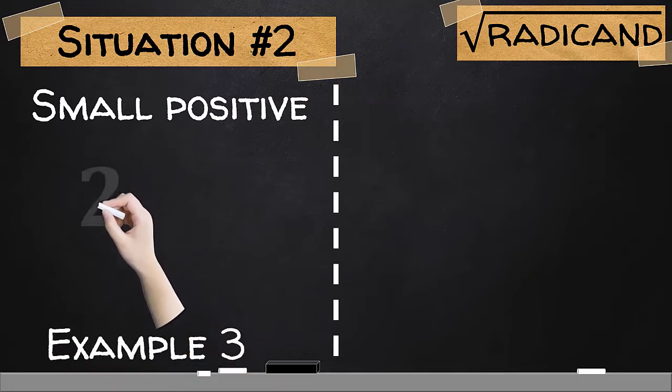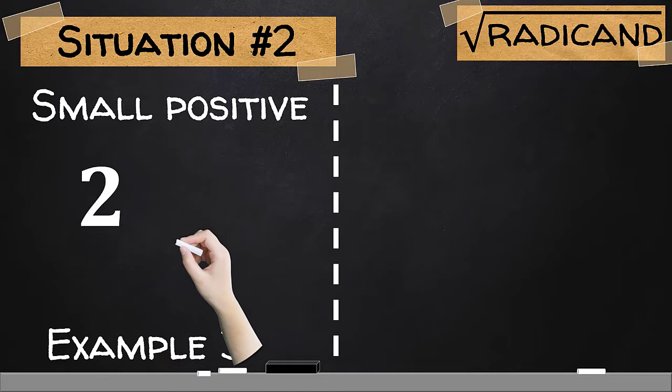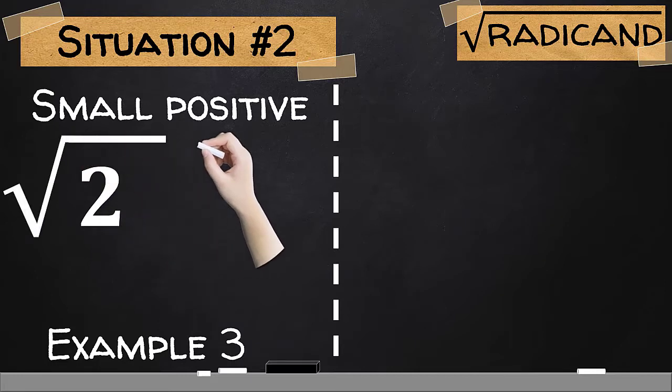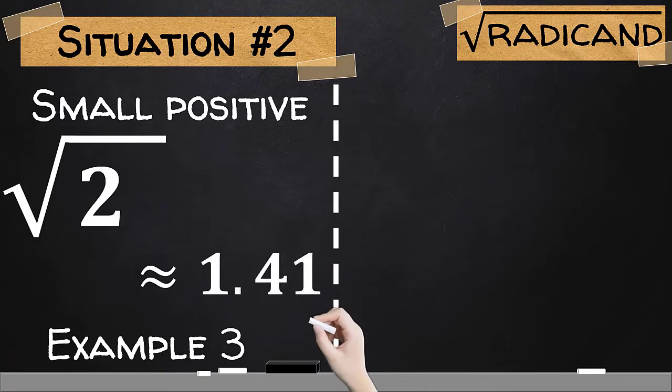What if the radicand is 2? To get the principal square root of this, again, we simply need to place the square root symbol. And since 2 doesn't have any factor which is a perfect square number, we could just simply stay as this is or approximate it to 1.41 rounded off into two decimal places.